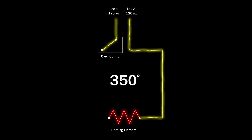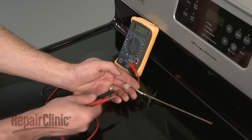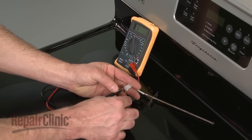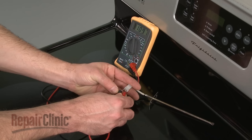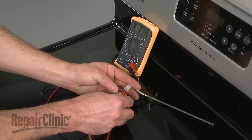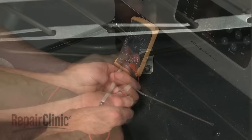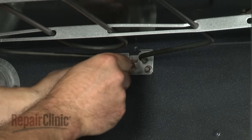If the thermostat or sensor is defective, the oven may not turn on at all. You can use a multimeter to measure the sensor's resistance at room temperature. The meter should display approximately 1100 ohms of resistance. If not, the sensor should be replaced.